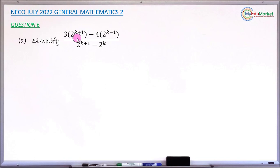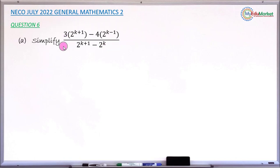The numerator of the fraction has 3 multiplied by the bracket — inside the bracket is 2 raised to the power of k plus 1, close the bracket — minus 4 multiplied by another bracket containing 2 raised to the power of k minus 1, then close the bracket. The denominator has 2 raised to the power of k plus 1, then minus 2 raised to the power of k. This is the fraction asked to simplify.